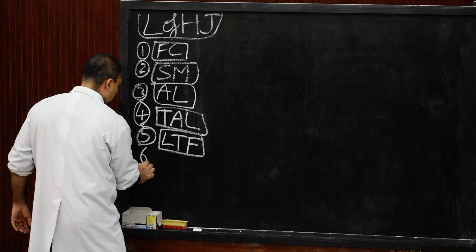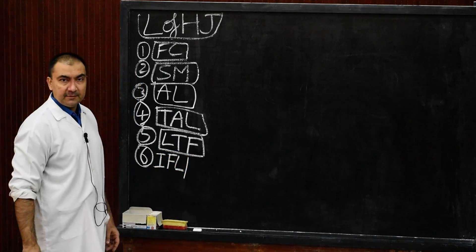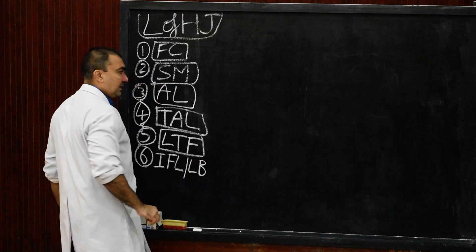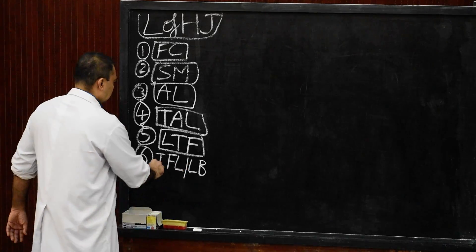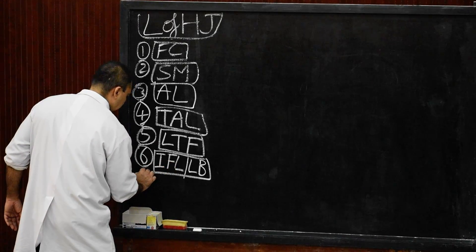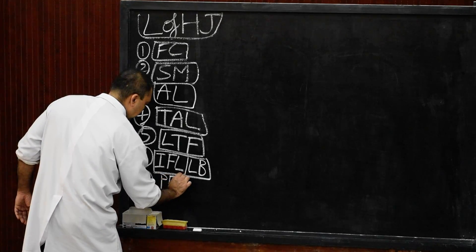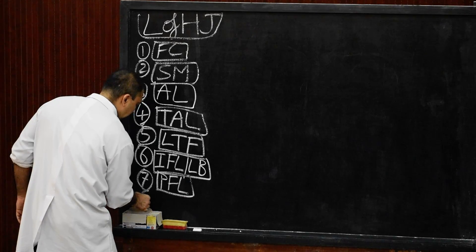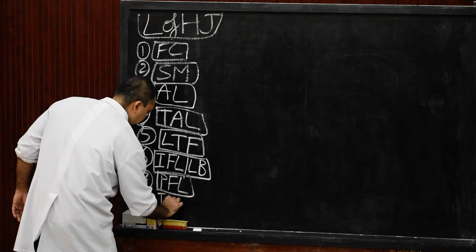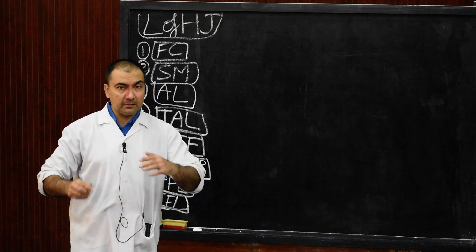After fibrous capsule and synovial membrane, we have number 3 — acetabular labrum; number 4 — transverse acetabular ligament; number 5 — ligamentum teres femoris, also known as ligament of head of femur; number 6 — iliofemoral ligament, also called ligament of Bigelow (B-I-G-E-L-O-W); number 7 — pubofemoral ligament; and number 8 — ischiofemoral ligament. Please remember all 8 in sequence.